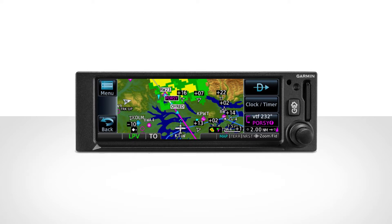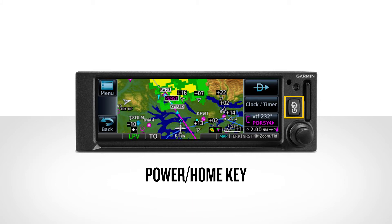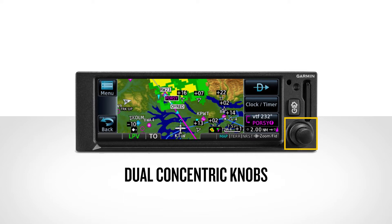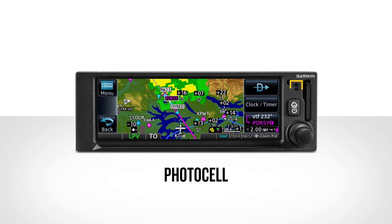The bezel contains the following components. The power/home key, which powers the unit on or off and provides access to the home page. Dual concentric knobs allow data entry, list scrolling, map range control, and page navigation. The knobs are a secondary method for unit control. A photocell measures ambient light to automatically adjust display brightness for different lighting conditions.